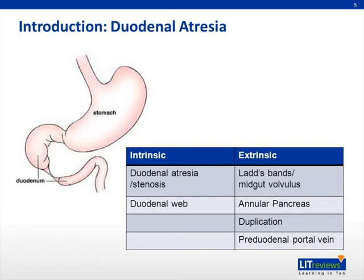Annular pancreas occurs when pancreatic tissue surrounds the duodenum, causing complete or incomplete duodenal obstruction. It results from a failure of the regression and rotation of the ventral bud. Duodenal atresia or stenosis is seen in all cases of annular pancreas, and it is considered a secondary change rather than a primary cause of duodenal obstruction.